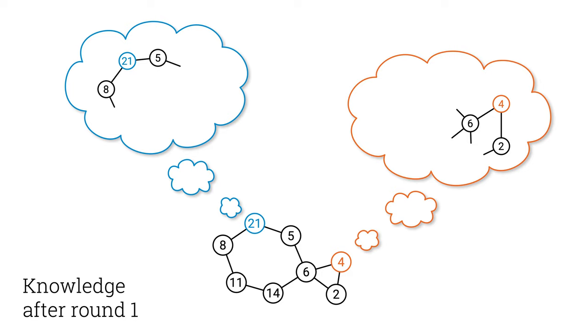And in the second round, everyone will tell this to all their neighbors, so everyone will learn what is the radius 1 neighborhood of each neighbor. And if you put together this information, you will have a full picture of your radius 2 neighborhood. And you continue this way.